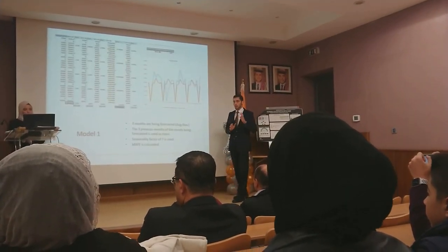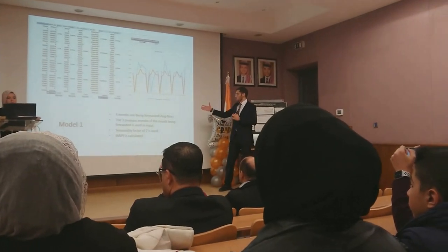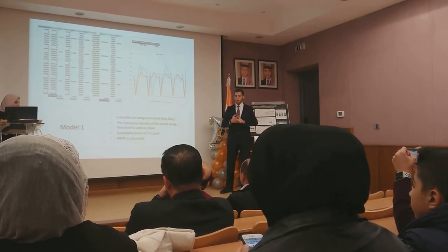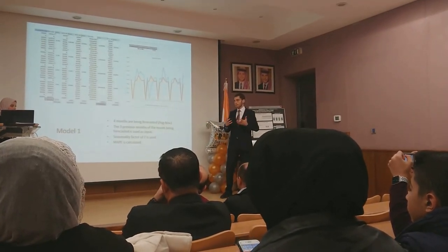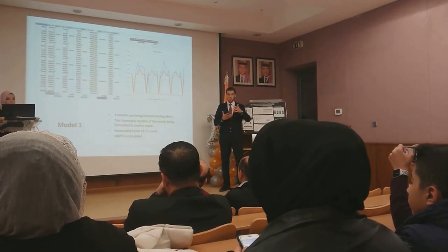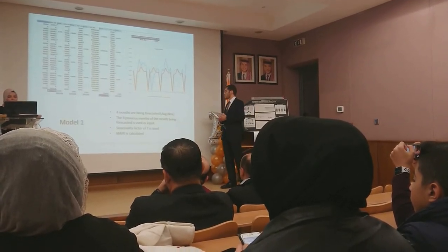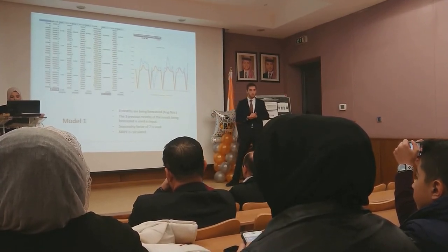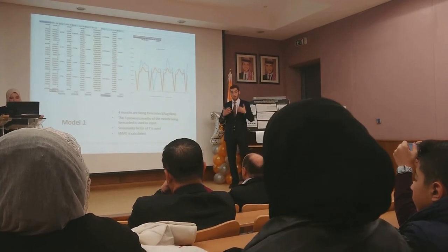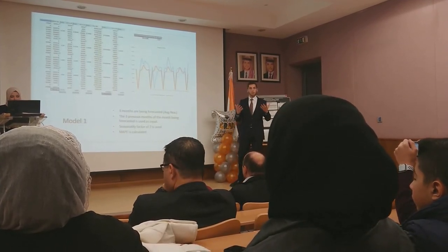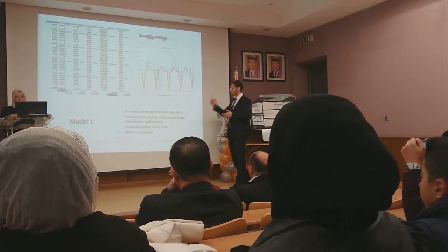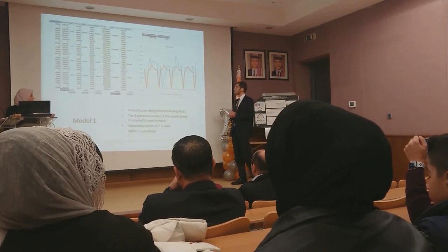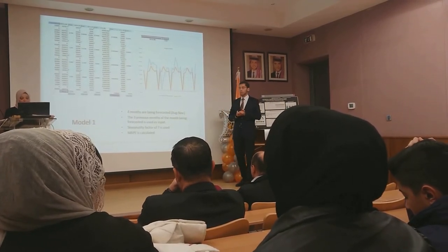We now arrive at Company B, which is somewhat different. Here we forecasted four months — August through November. To forecast each month, we used the three previous months. The seasonality factor was 7, because data was obtained on a daily basis, giving about 30 data points per month. We used mean absolute percentage error to calculate and compare the errors.